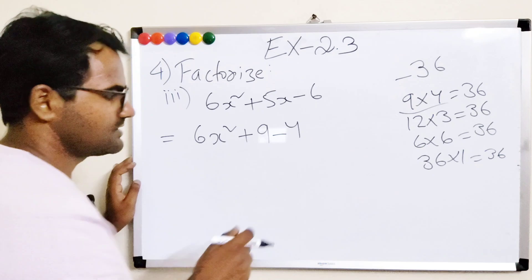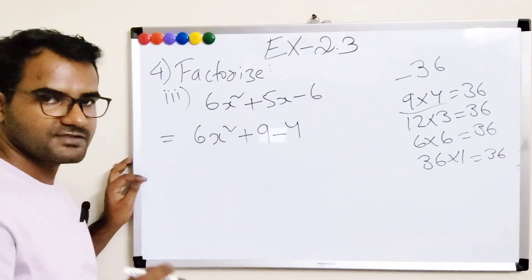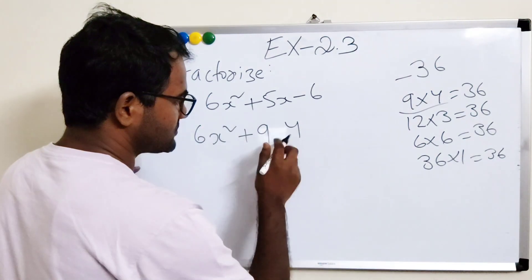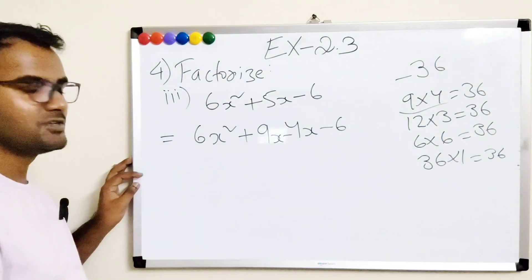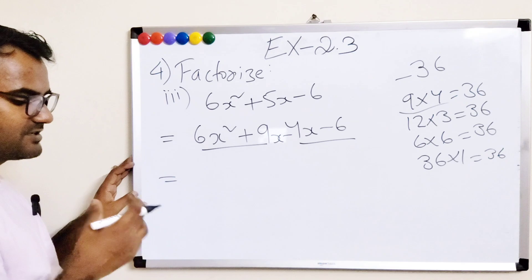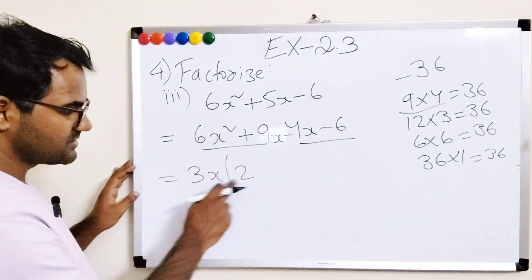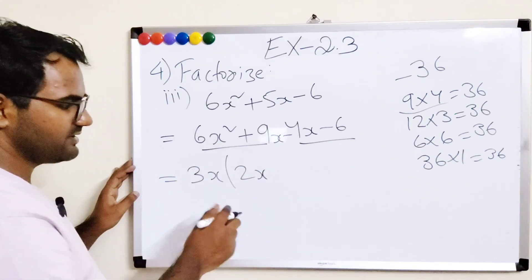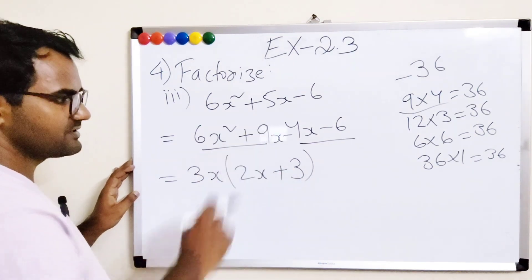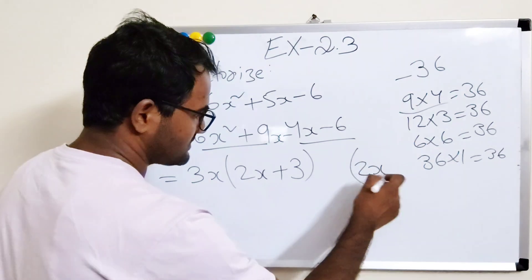We split 5x as plus 9x minus 4x and write: 6x² + 9x minus 4x minus 6. Grouping: first group 6x² + 9x, second group minus 4x minus 6. Taking 3x common from the first group: 3x(2x + 3). Since 3×2 = 6, x×x = x², and 3x×3 = 9x.